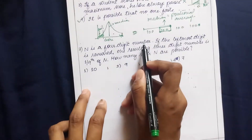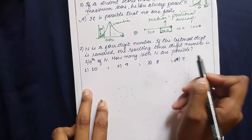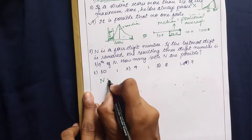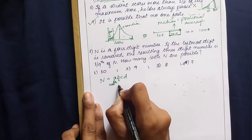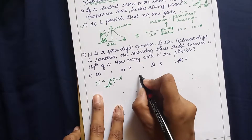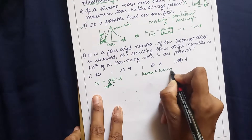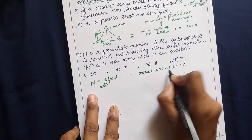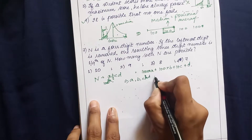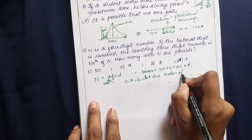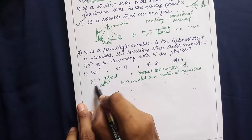Next question: N is a four-digit number. The leftmost digit is removed and the resulting three-digit number is one ninth of N. How many such N are possible? Let the four-digit number be A, B, C, D where A is the thousands place, B the hundreds, C the tens, and D the ones. We can represent N as 1000A + 100B + 10C + D, where A, B, C, D are natural numbers.